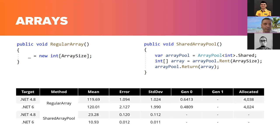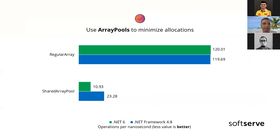The benchmark results show that regular array allocation time stays almost the same, but for ArrayPool allocations are absent and .NET 6 is twice as fast. ArrayPool helps to minimize memory allocations and garbage collection overhead, thereby increasing efficiency and performance. This can be used in situations where you want to minimize allocations and increase efficiency by avoiding frequent creation and destruction of regular arrays.